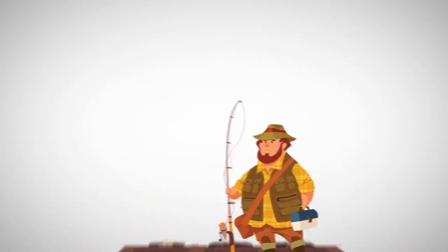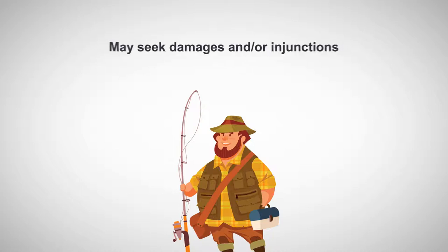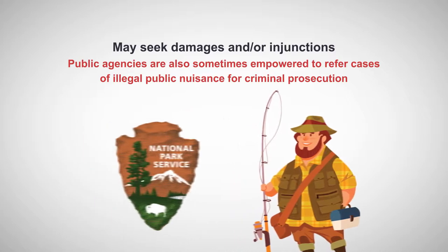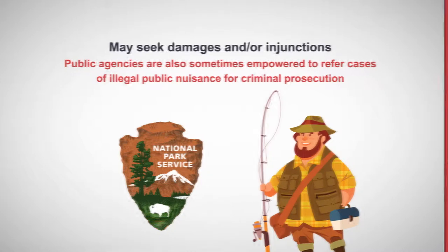Plaintiffs in public nuisance lawsuits, including state departments and agencies, may seek damages and or injunctions. Public agencies are also sometimes empowered to refer cases of illegal public nuisance for criminal prosecution.